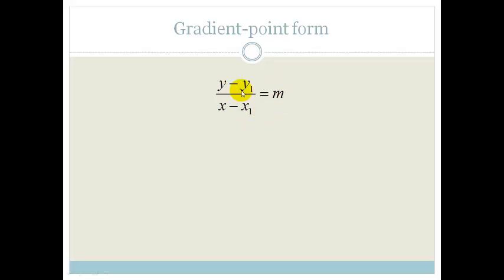But we can rearrange this. We can multiply both sides by the denominator and we end up with this equation: y minus y1 equals m times x minus x1. And this is called the gradient point form.